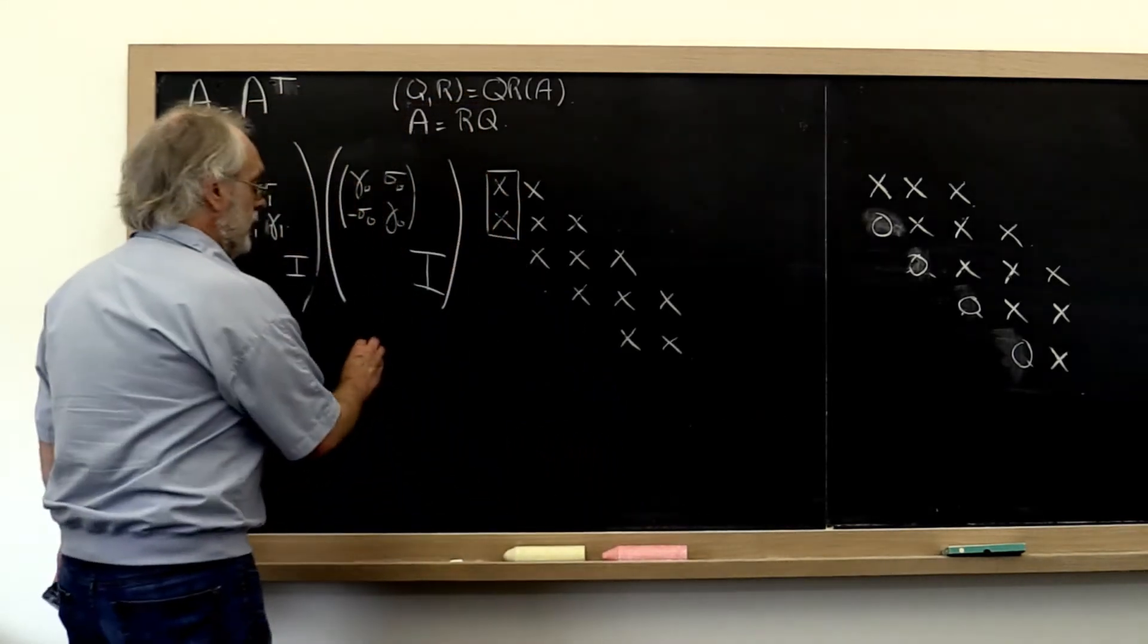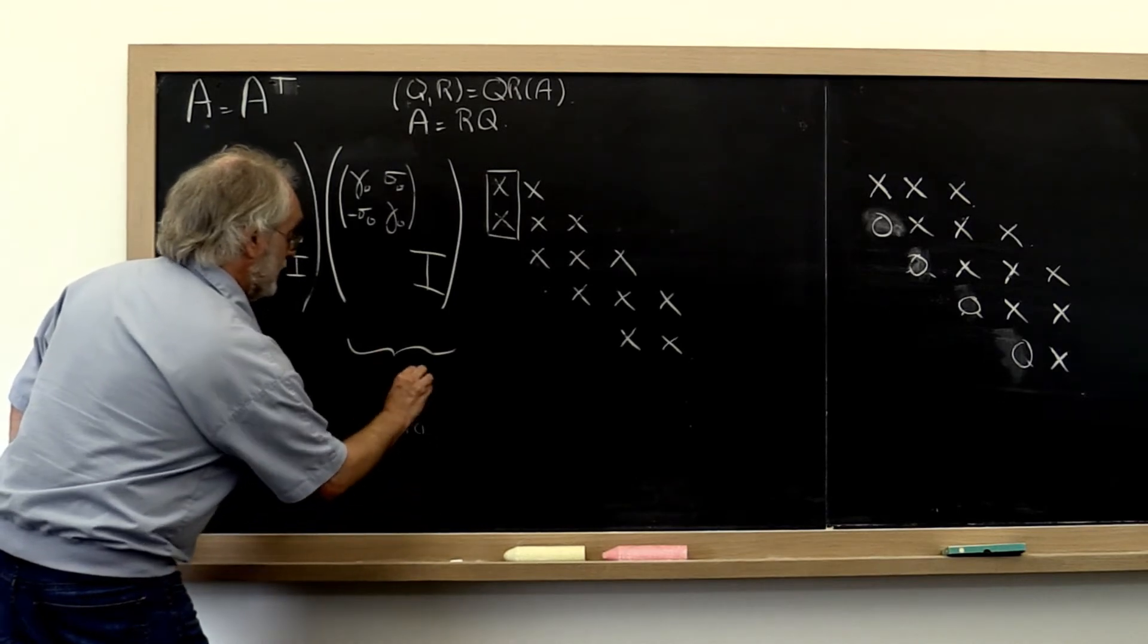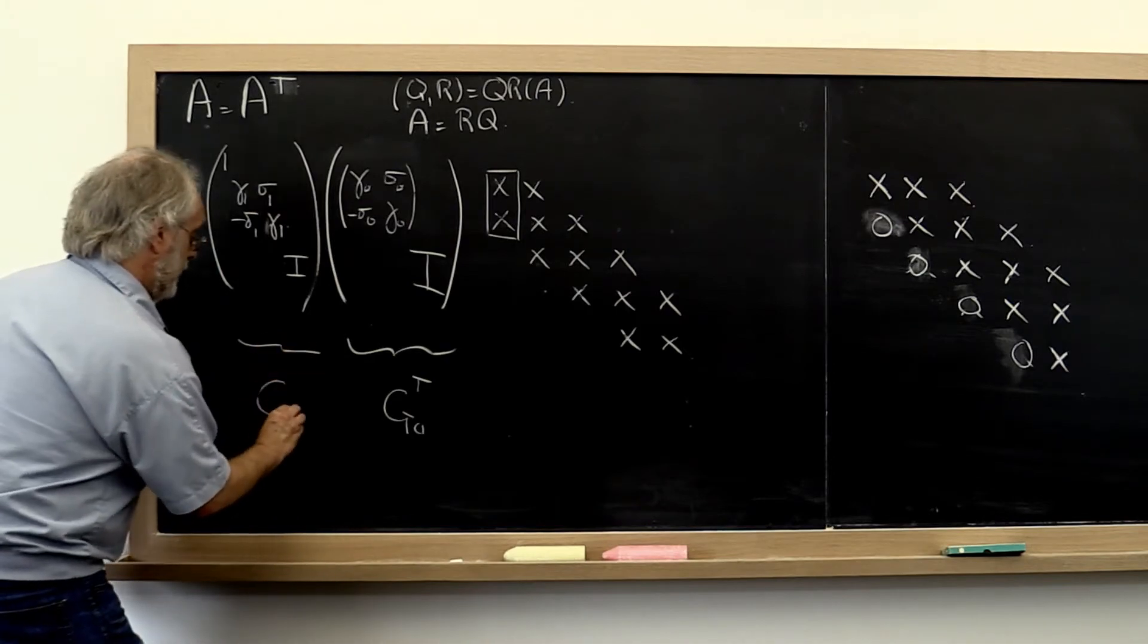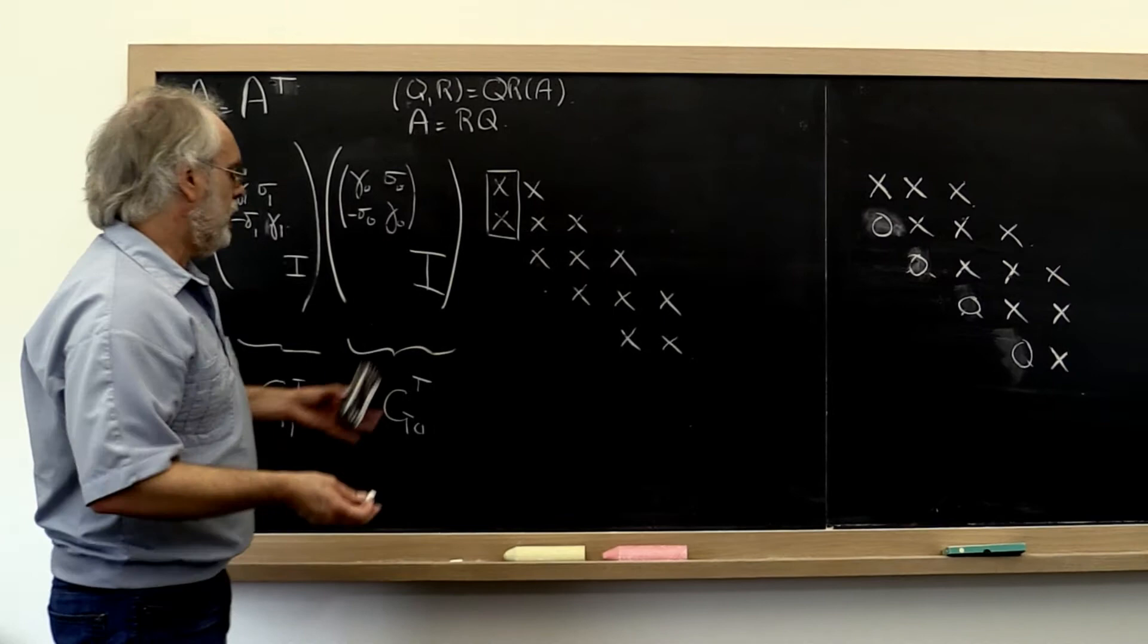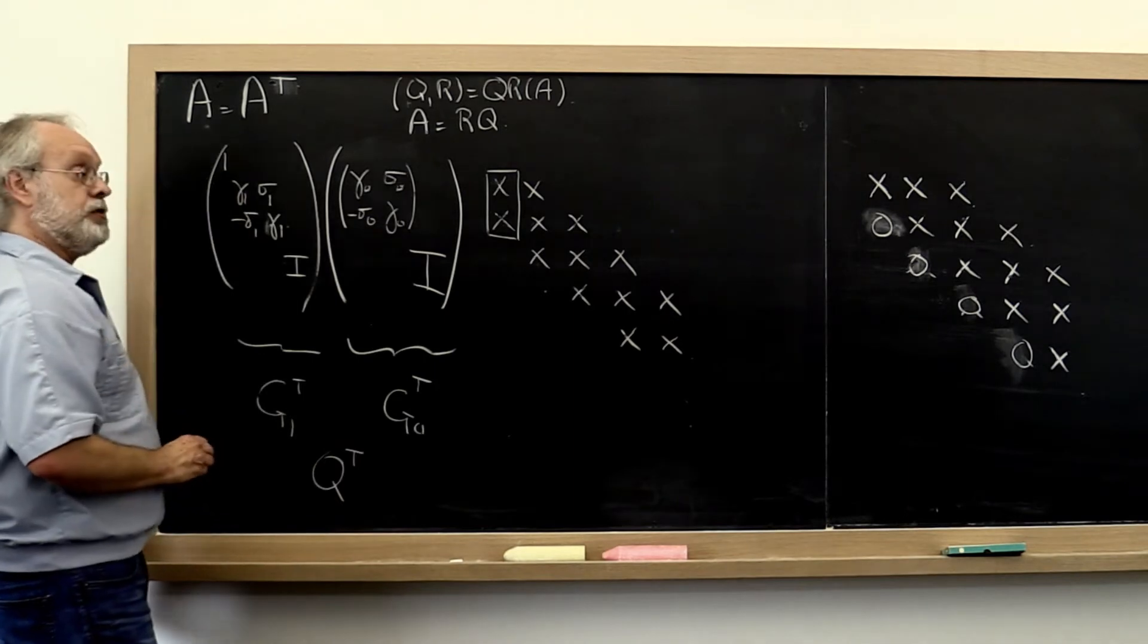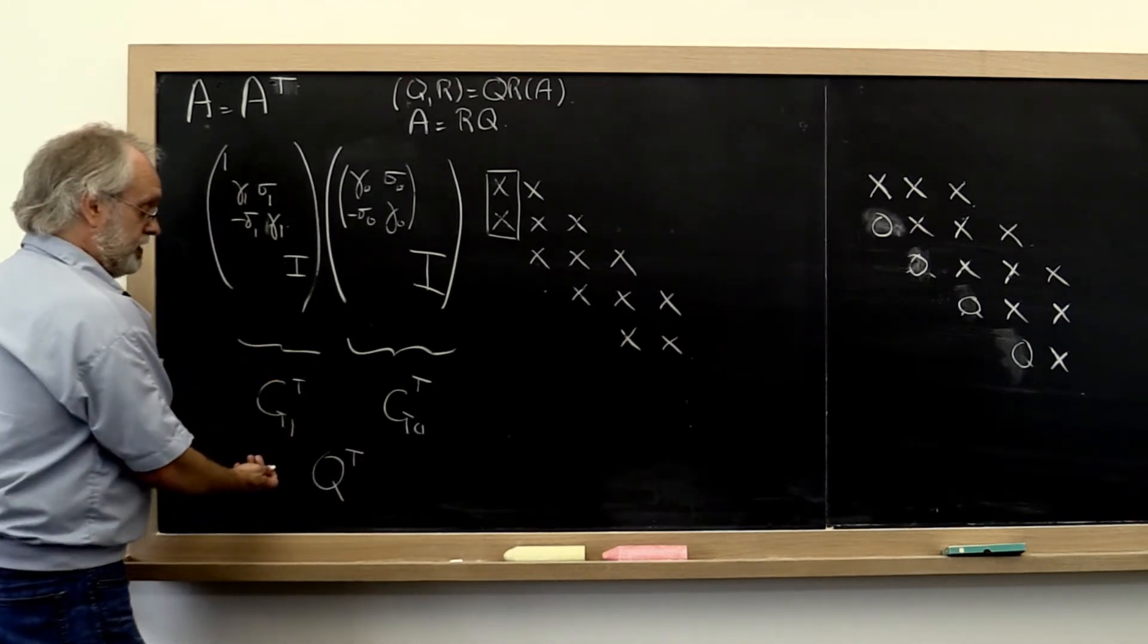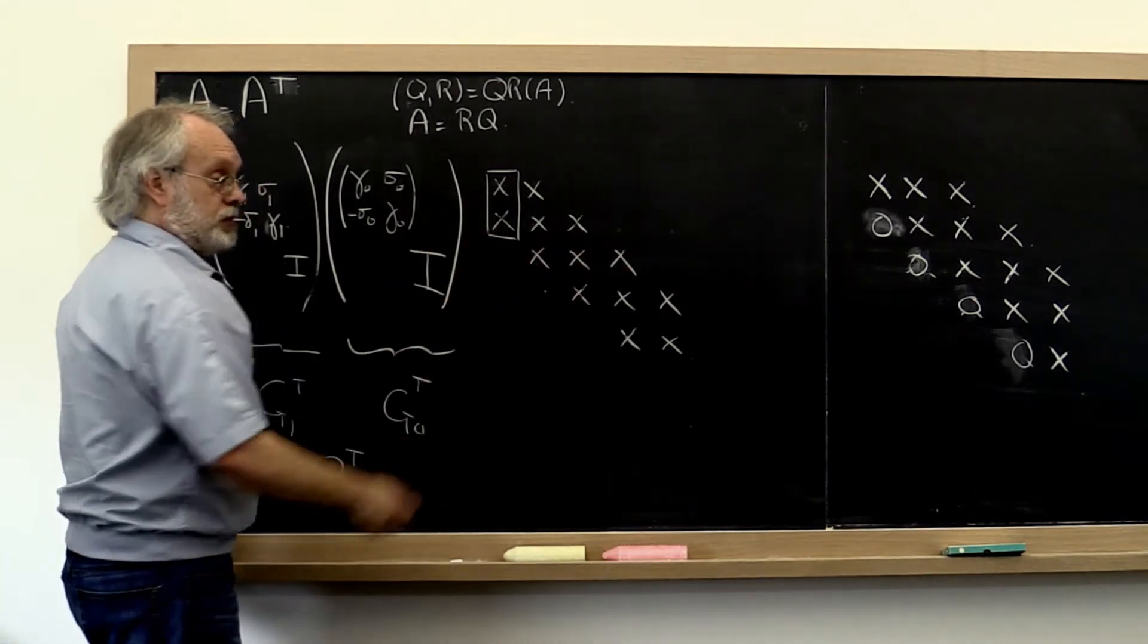So I'm going to label this whole matrix here G0 transpose, this here G1 transpose, etc. And that's because when we multiply all of these together, what we really get is our Q transpose that came from the QR factorization. So if we then multiply both sides on the left by Q, we end up getting A equals Q times R.